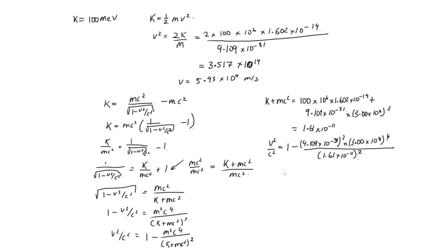Now substituting into the full expression: v squared over c squared equals 1 minus (9.109 times 10 to the minus 31) squared times (3.00 times 10 to the 8) to the power of 4, divided by (1.61 times 10 to the minus 11) squared. Solving on the calculator gives 0.999997. Taking the square root, v equals 0.999987c. This is indeed relativistic — the electron is travelling at almost exactly the speed of light.